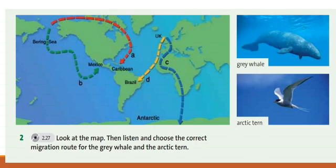Okay, now let's choose the correct migration. Балалар, бізде 4 бағыт берілген: A, B, C, D. Осы 4 бағыттың қайсысы осы екі жануарға тиесілі — яғни gray whale және Arctic tern?